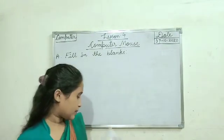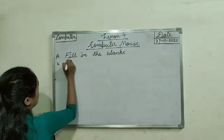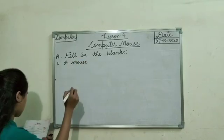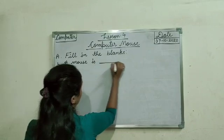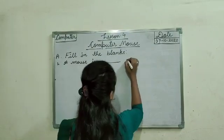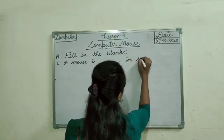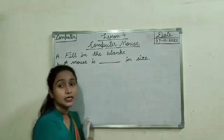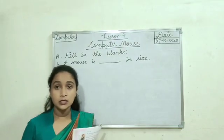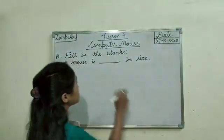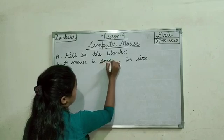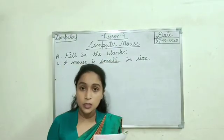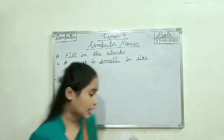Fill in the blanks, first one: M-O-U-S-E, mouse, I-S, is, dash, I-N-A-S-I-Z-E, in a size. A mouse is dash in size. A mouse is small in size. Mouse is small in size. S-M-A-L-L — a mouse is small in size.